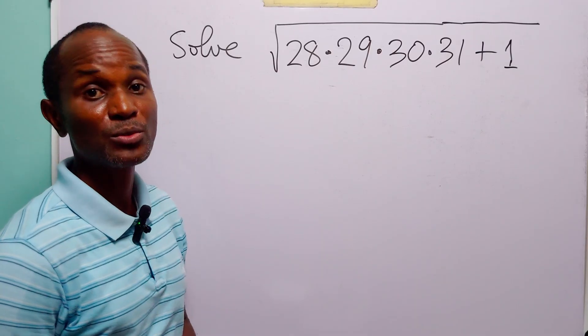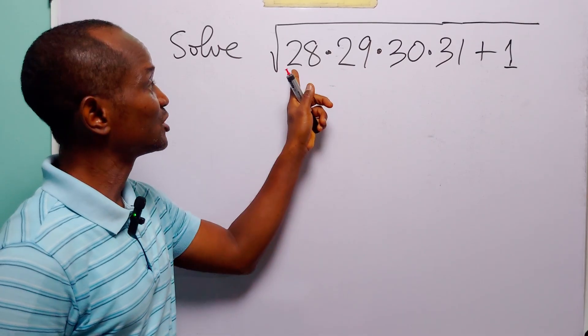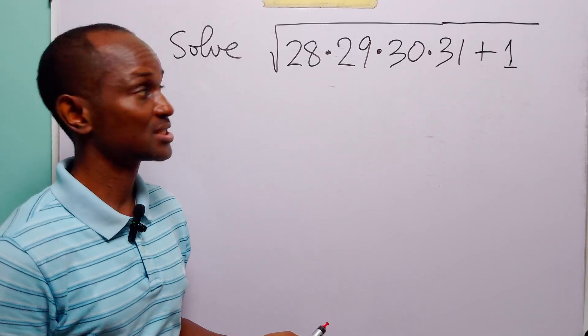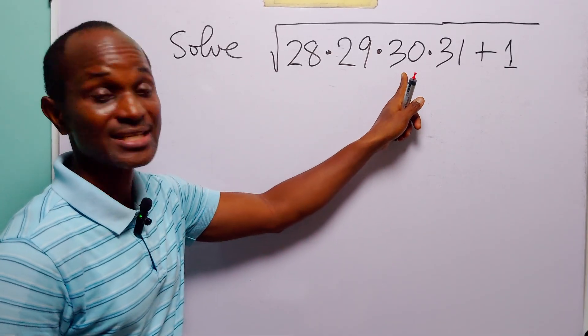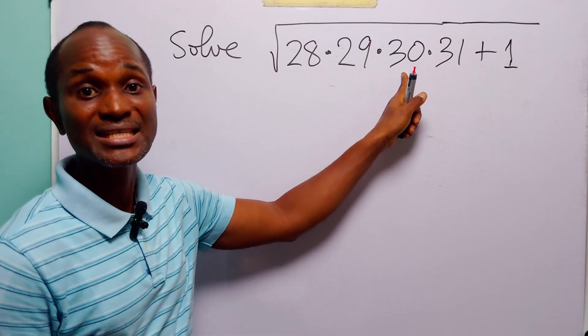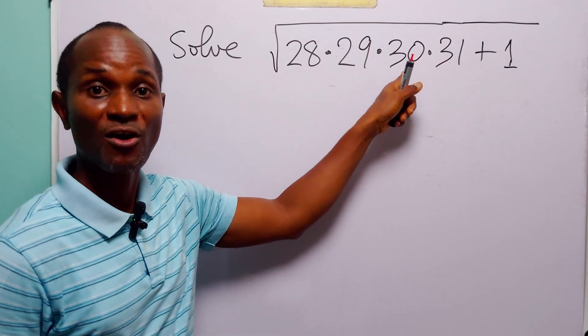Now what we are going to do is that we will choose one number between these four numbers that is very easy to work with, and of course you know that that number is going to be 30 because it's easy for us to divide this number and it's easy for us to find a square of this number.